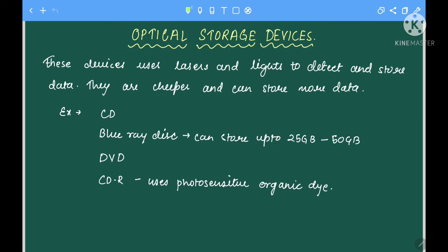Let's see the second type of storage device, which is optical storage device. These devices use lasers and lights to detect and store data. They are cheaper and can store more data.